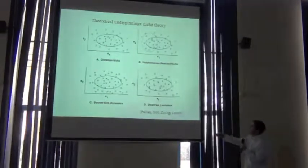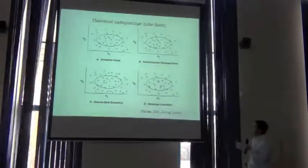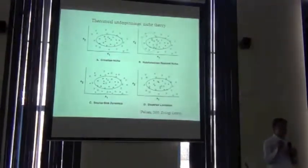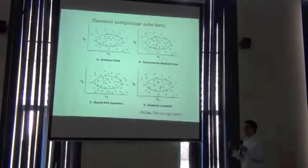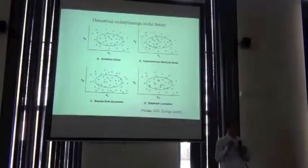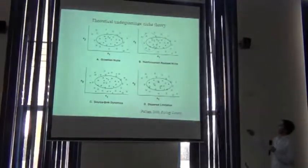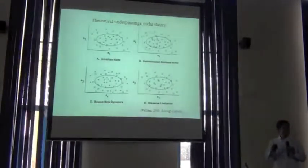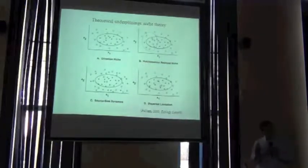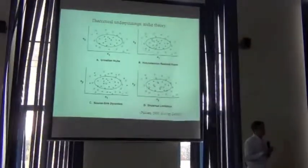Another key point: you're going to get occurrences outside the fundamental niche, but also absences within the fundamental niche, for any number of reasons. A key one is dispersal limitation — it's not that all environments within the fundamental niche will be occupied, because the species may simply not have been able to disperse there. So this nice neat picture gets muddy with real data: not all occurrences are necessarily within the fundamental niche, and not all of the fundamental niche will be occupied.